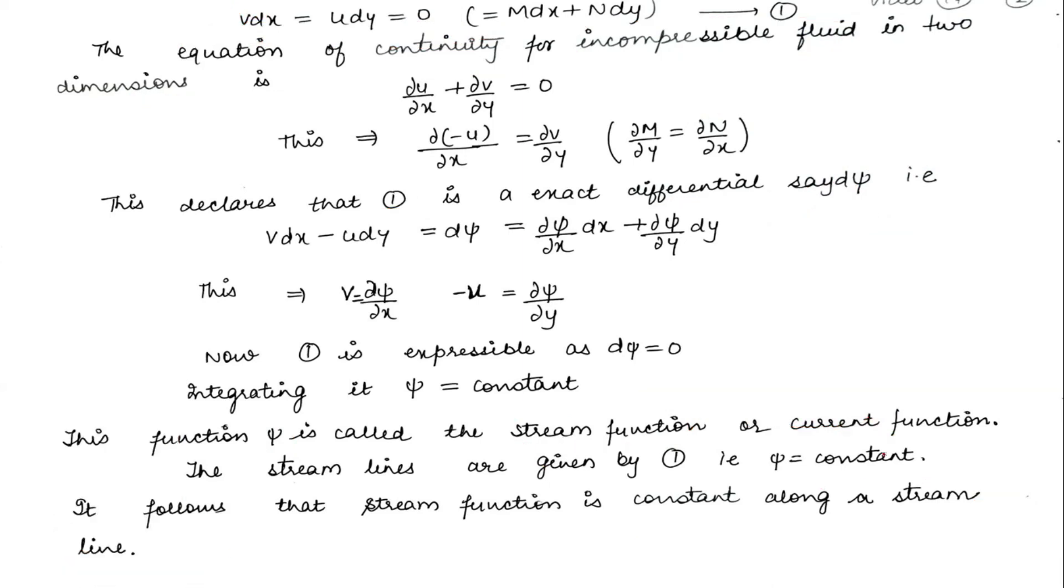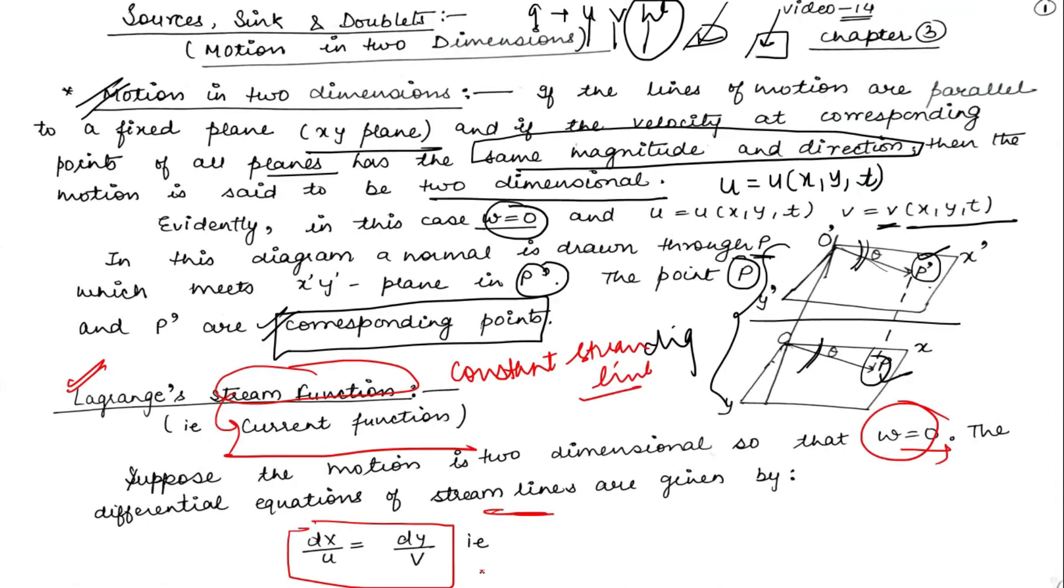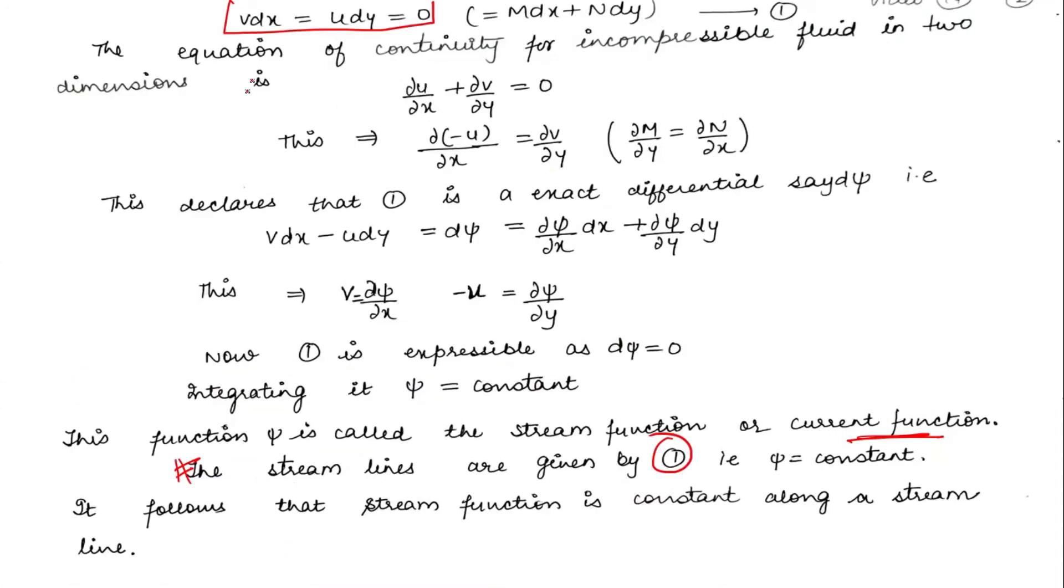The streamlines are given by psi equals constant, which we read in the previous equation. We can write this function from the previous page. That is, psi equals constant, which implies that stream function is constant along a streamline. This is also for derivation to show that stream function is constant along a streamline.